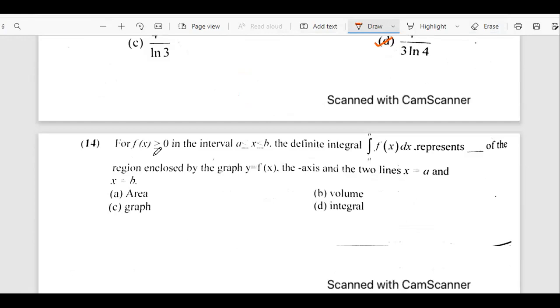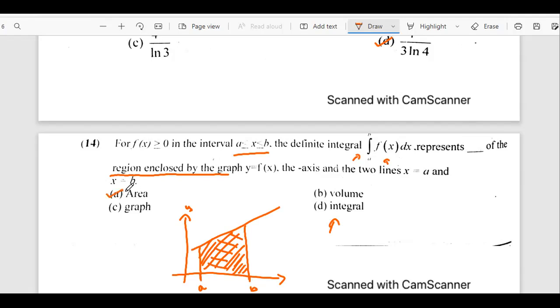Question 14. For f(x) greater than or equal to 0 in the interval from a to b, the definite integral of f(x) represents the area of the region enclosed by the graph of y = f(x), the x-axis, and the two lines x = a and x = b. We get the area, but we should know that whenever we integrate, yes, it is an integral, but what it represents for the graph is basically the area, right? So we are talking about the area of the graph. So the answer is going to be a.